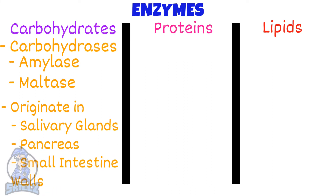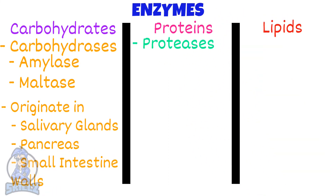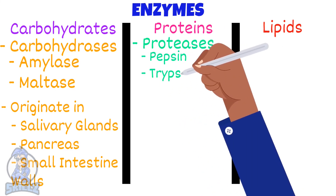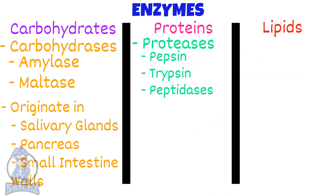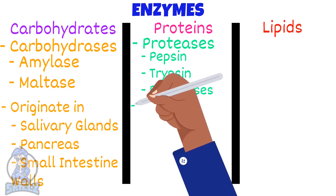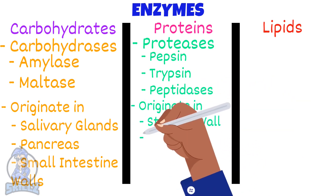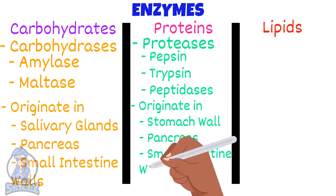Proteins are broken down by enzymes called proteases. Some protease enzymes include pepsin, trypsin, and peptidases. These enzymes originate from the stomach wall, pancreas, and the wall of the small intestine.